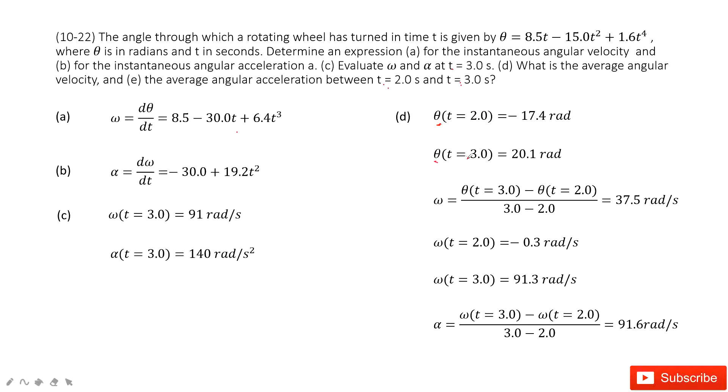At these two points in time, we just input t equal to 2 in this function, you get the theta. Input t equal to 3 seconds, you get the angle there. Then the average angular velocity is using the final theta, final angle minus initial angle divided by time taken. You can get it there.